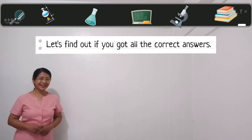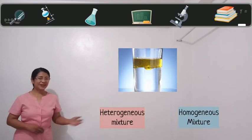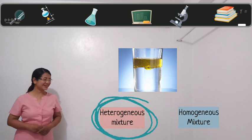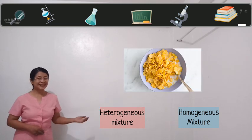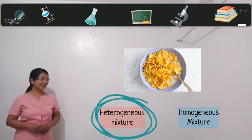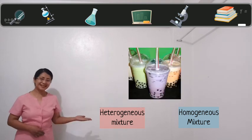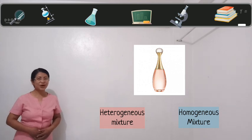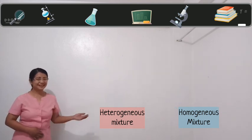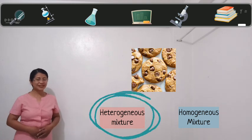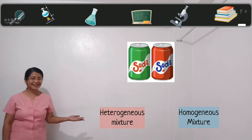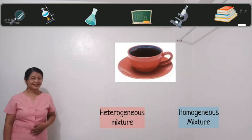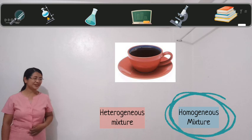Let's find out if you got the correct answer. Oil and water mixture is an example of heterogeneous mixture. Cereal with milk is an example of heterogeneous mixture. Milk tea is an example of heterogeneous mixture. Cologne or perfume is an example of homogeneous mixture. Cookies is an example of heterogeneous mixture. Soda is a homogeneous mixture. Paint is a homogeneous mixture. A cup of coffee is a homogeneous mixture.